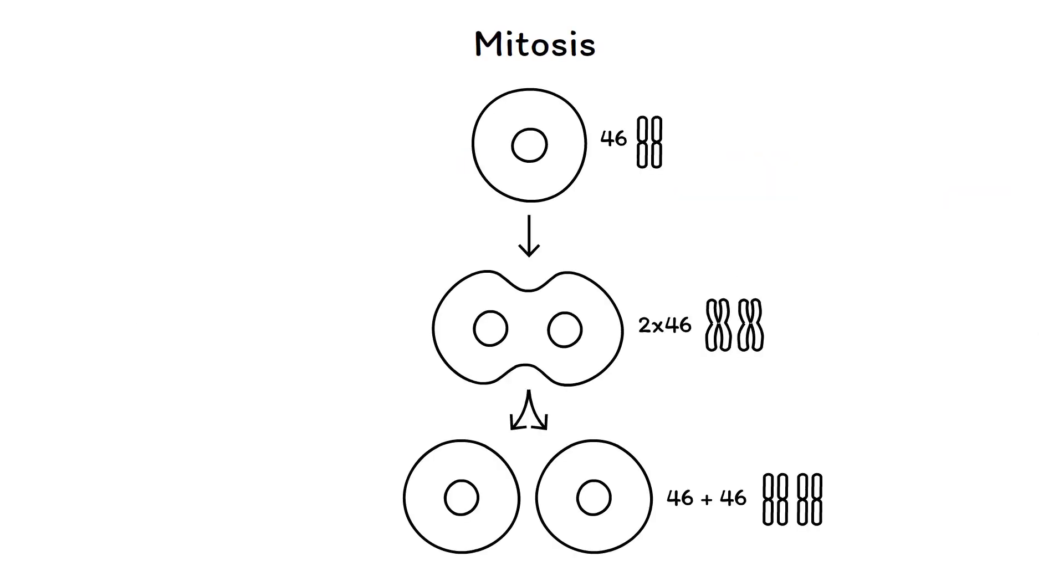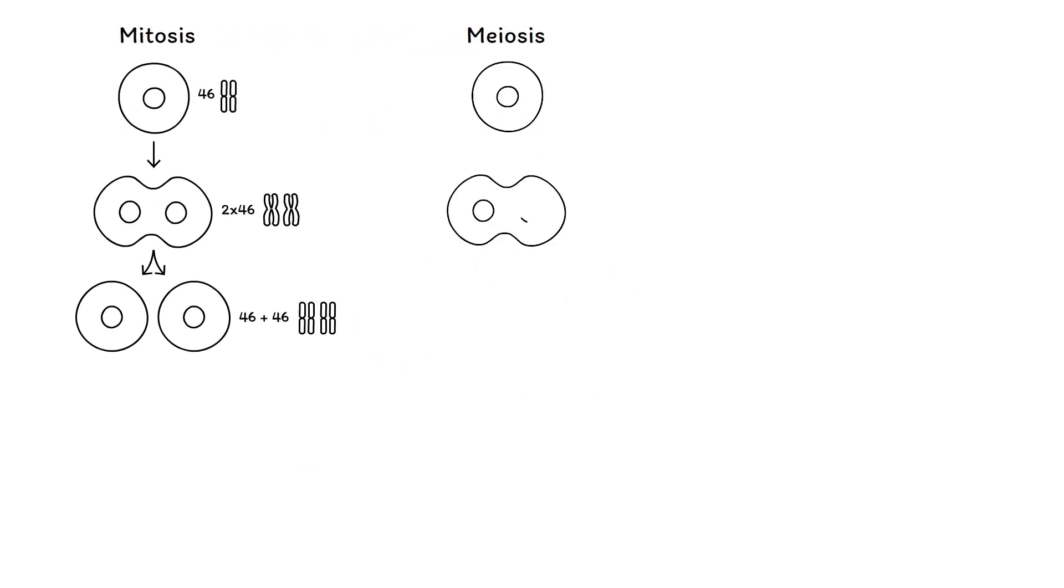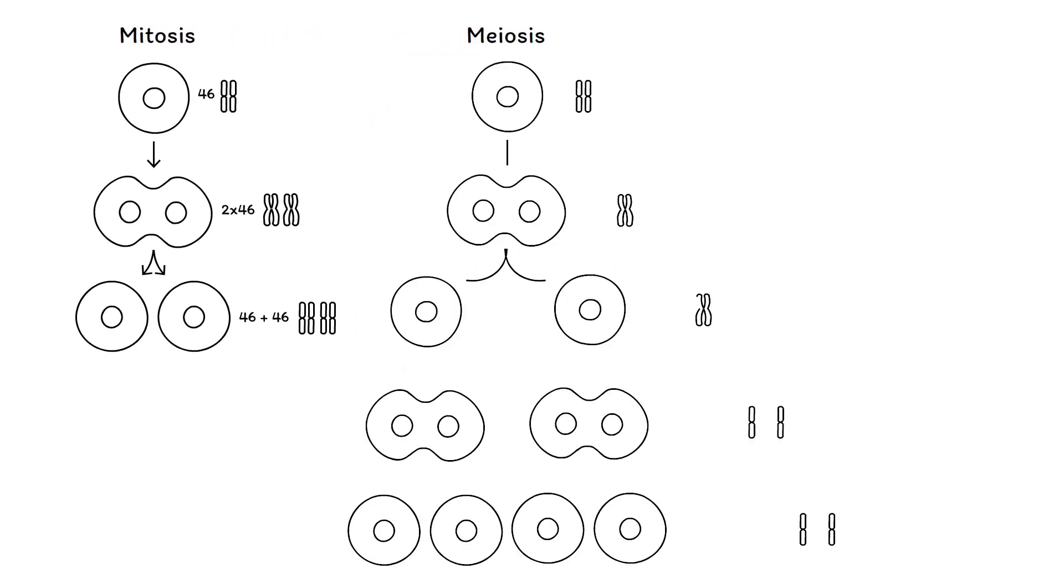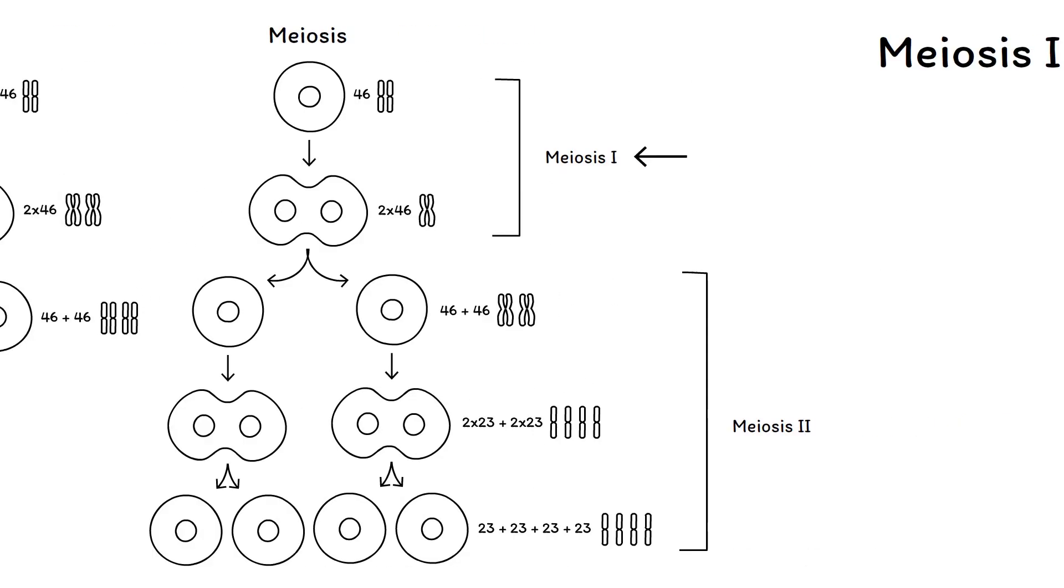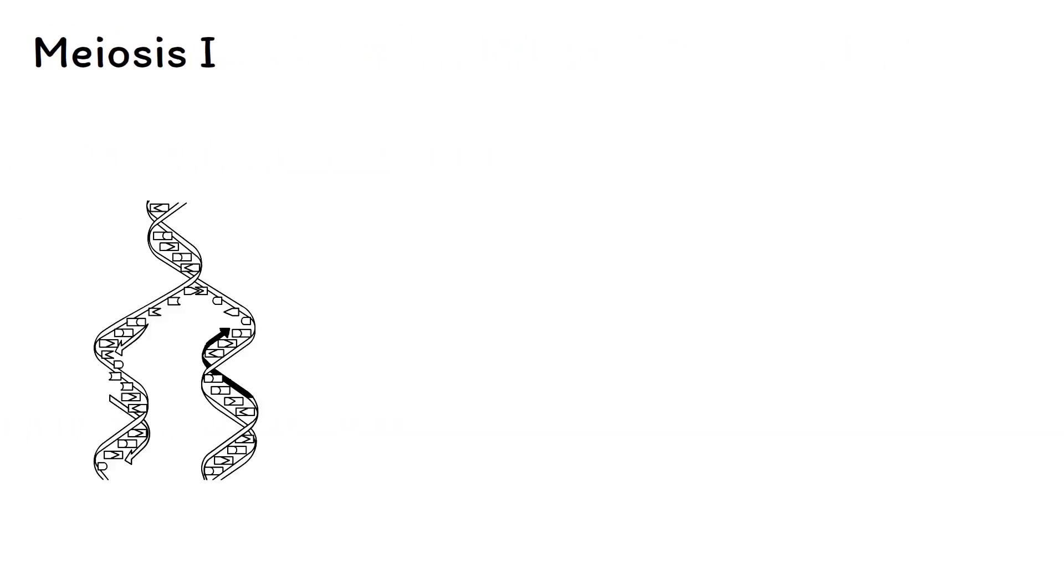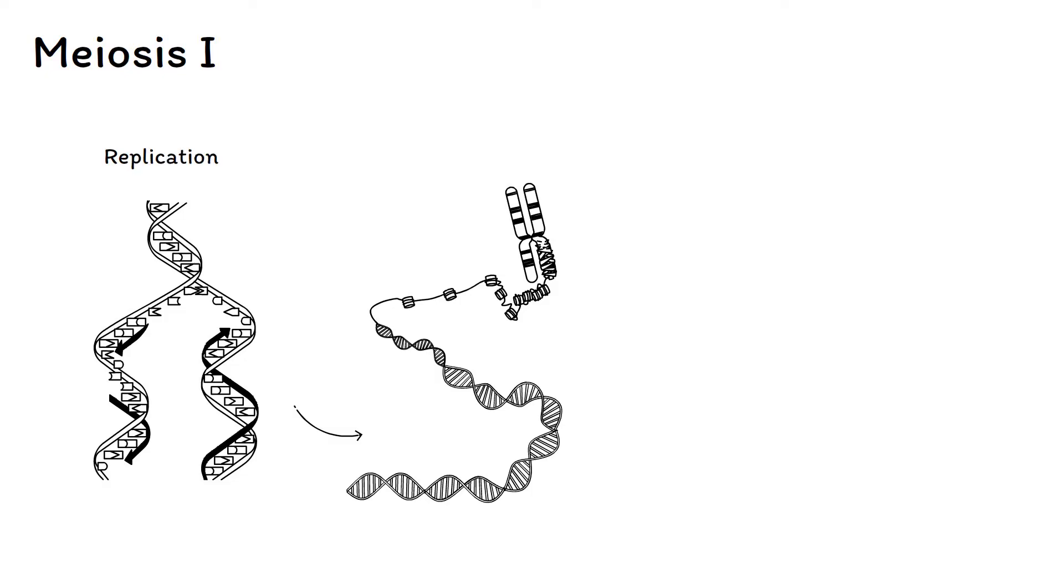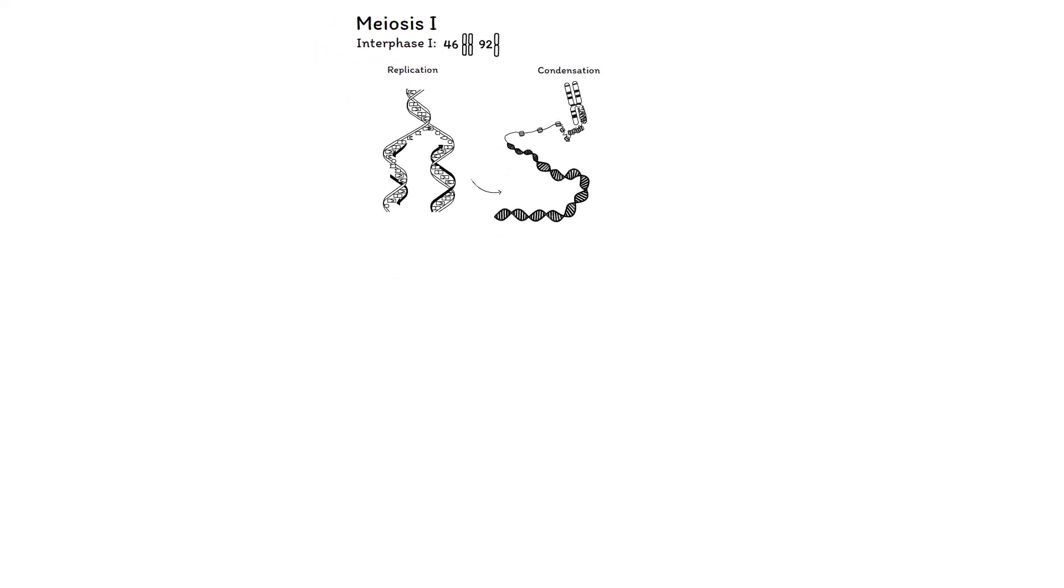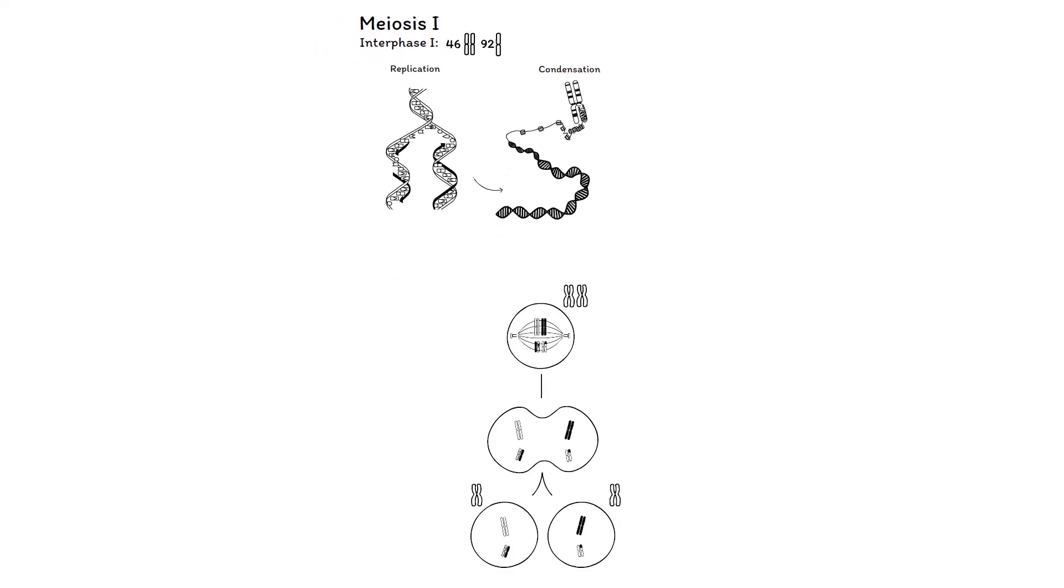Unlike mitosis, meiosis consists of two cell divisions, meiosis I and meiosis II. This process begins in meiosis I with the replication and condensation of DNA. Meiosis I ends with forming two haploid cells from a diploid cell.